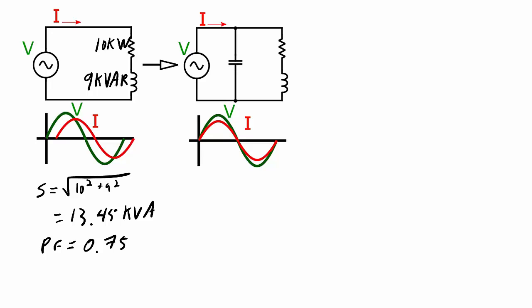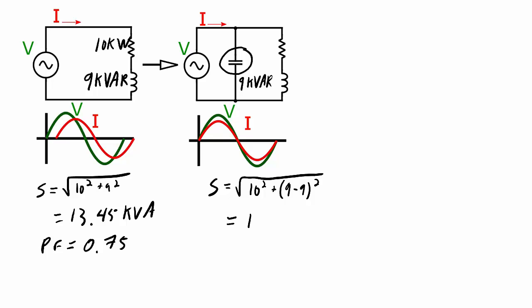10 kilowatts over 13.45 kVA gives a power factor of 0.75. Now if I introduce a capacitor with the same amount of reactive power as the inductor — 9 kVAR — the apparent power becomes the square root of 10 squared plus (9 minus 9) squared. The 9 kVAR of the inductor and the 9 kVAR of the capacitor cancel each other out, leaving just the square root of 10 squared, which is simply 10 kVA. Since apparent power and real power are equal, the power factor equals 1. The only additional calculation needed is the actual capacitance value required to counteract the 9 kVAR of inductive power.